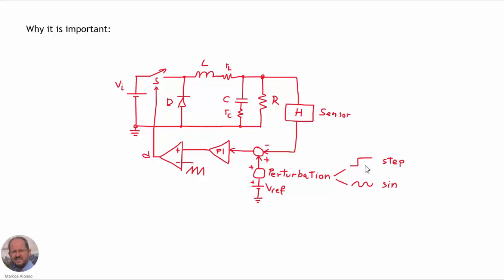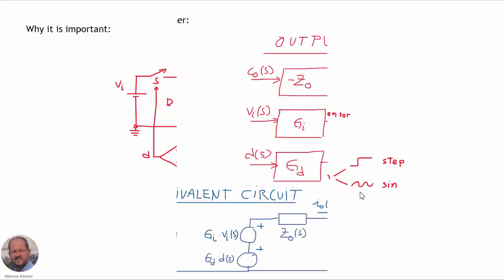Applying a step transient at the reference voltage can be useful to quickly change the output voltage for specific applications. Applying a sinusoidal perturbation can also be useful, for example, if we want to transmit information superposed to the DC level at the output. This can be employed in wireless power transfer to transfer information from the primary to the secondary, or in LED applications to transfer information superposed to the light emitted by the LED.